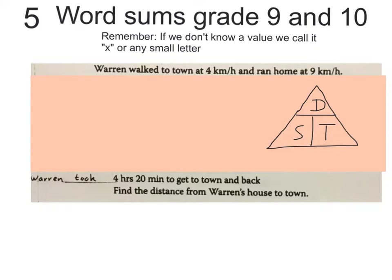If you take speed times time to get distance, you can also go distance divided by speed to get time, or distance divided by time to get speed. It's a triangle that will help us. You need to understand it before you go on with this video. The question won't have this in it — that's something that you should work out yourself.